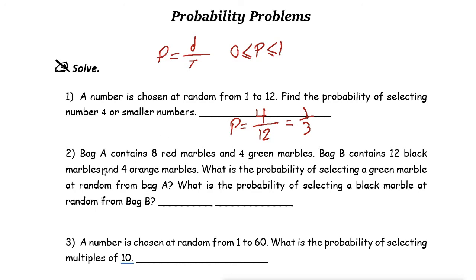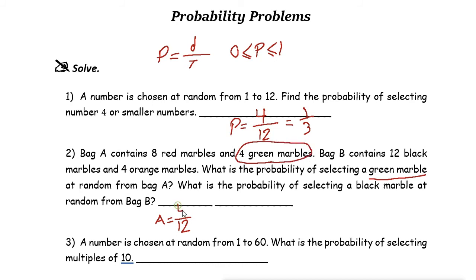Next one. Bag A contains eight red marbles and four green marbles. What is the probability of selecting a green marble at random from bag A? So for bag A, we have eight red marbles and four green marbles, so altogether we have twelve marbles. The desired outcome is selecting a green marble, and we have four green marbles. So it is four out of twelve, which is one-third.